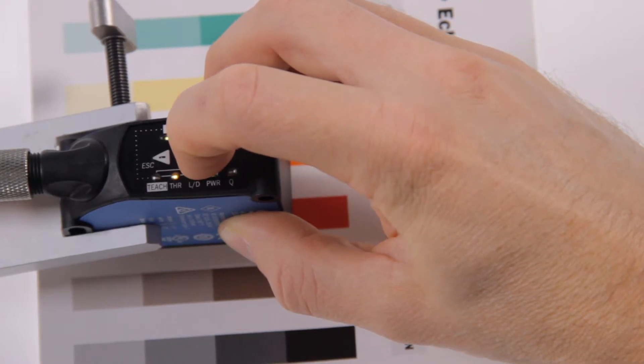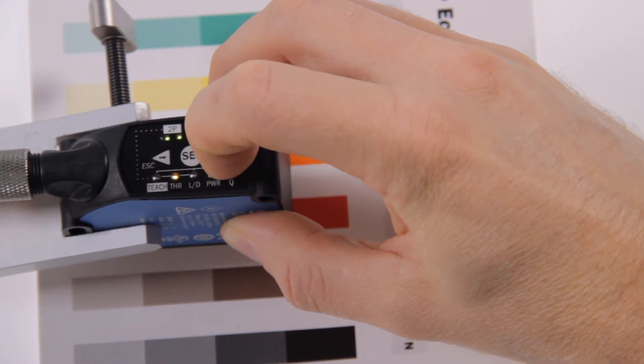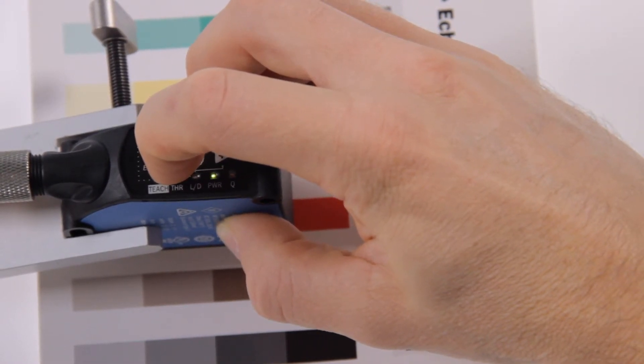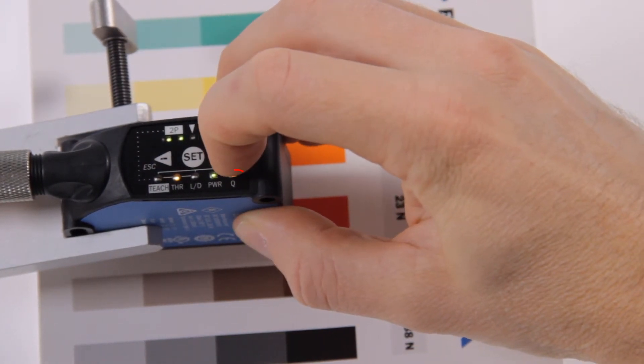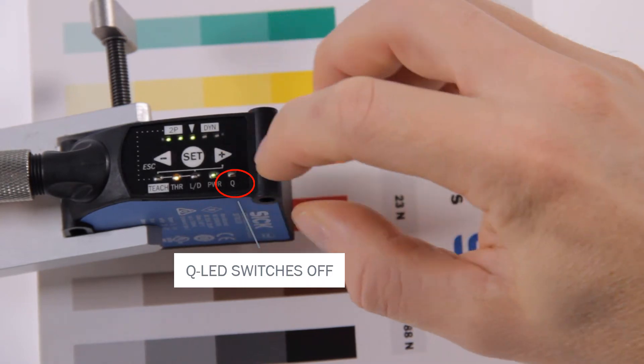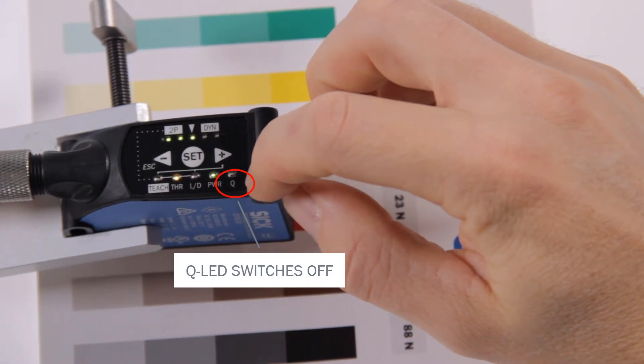Use the plus and minus buttons to adjust the threshold. The arrow symbol in the center indicates the 50% threshold. When selecting a threshold out of range the QLED switches off.